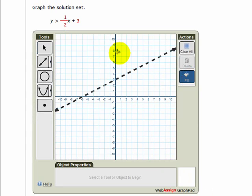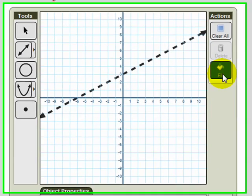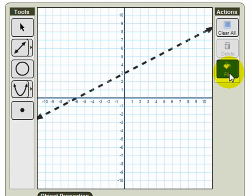Now we need to choose which side of the boundary line to shade. So we choose the fill tool over here on the right-hand side of the graph pad. The fill tool is essentially a toggle on or off option. So we can either choose to fill by clicking or to not fill by clicking.